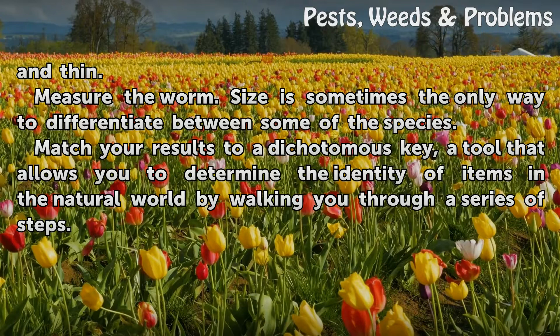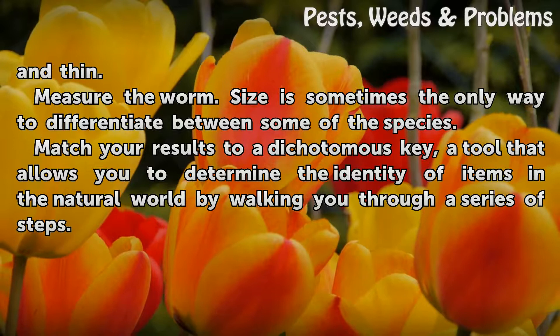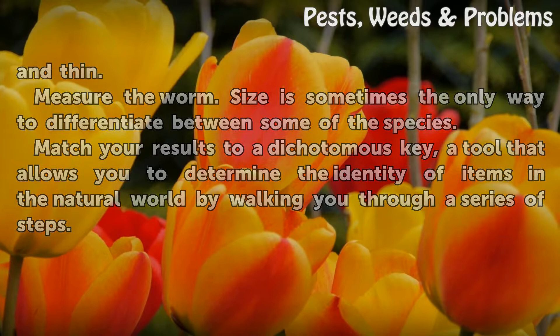Measure the worm. Size is sometimes the only way to differentiate between some species. Match your result to a dichotomous key — a tool that allows you to determine the identity of items in the natural world by walking you through a series of steps.